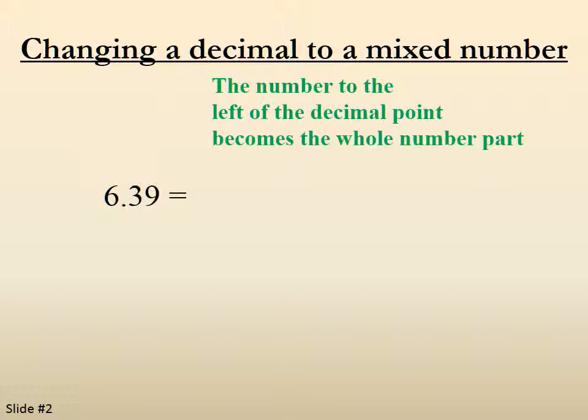The number to the left of the decimal point becomes the whole number part, which in this case is 6. So the .39 we turn into the fraction just like we did before.